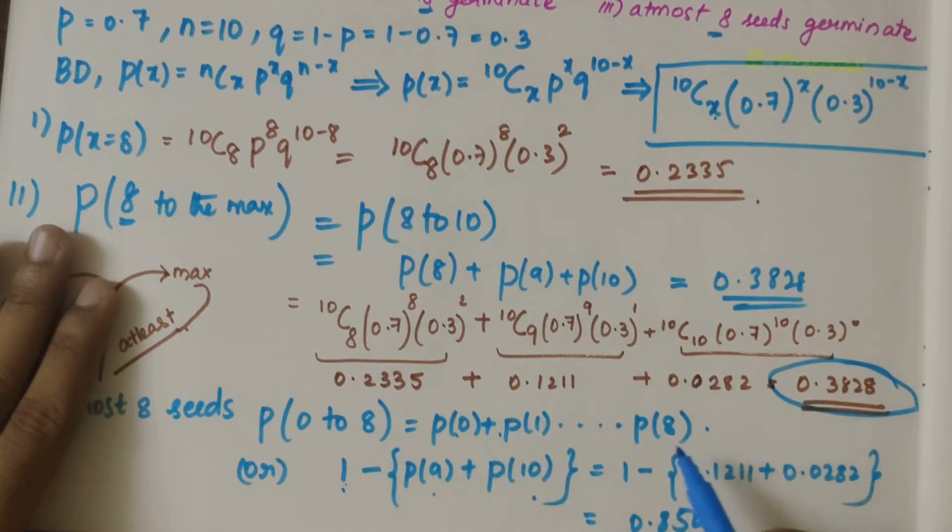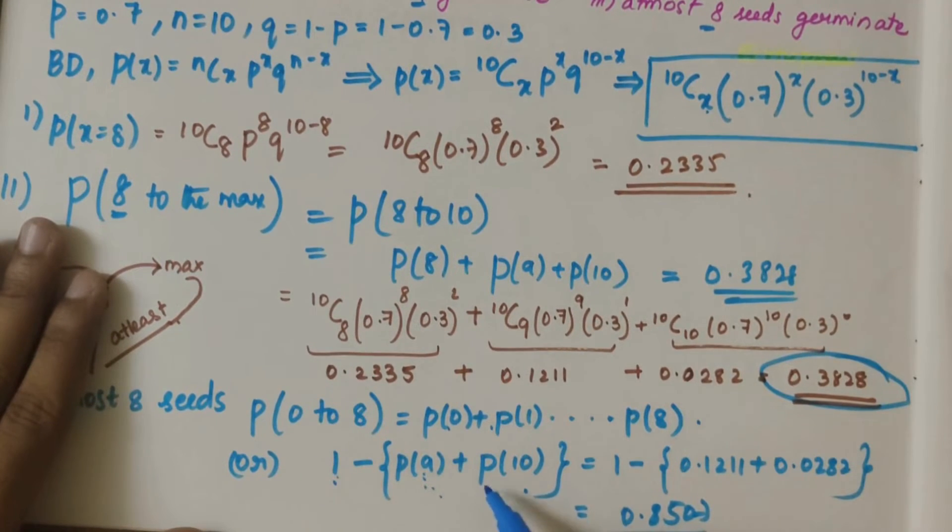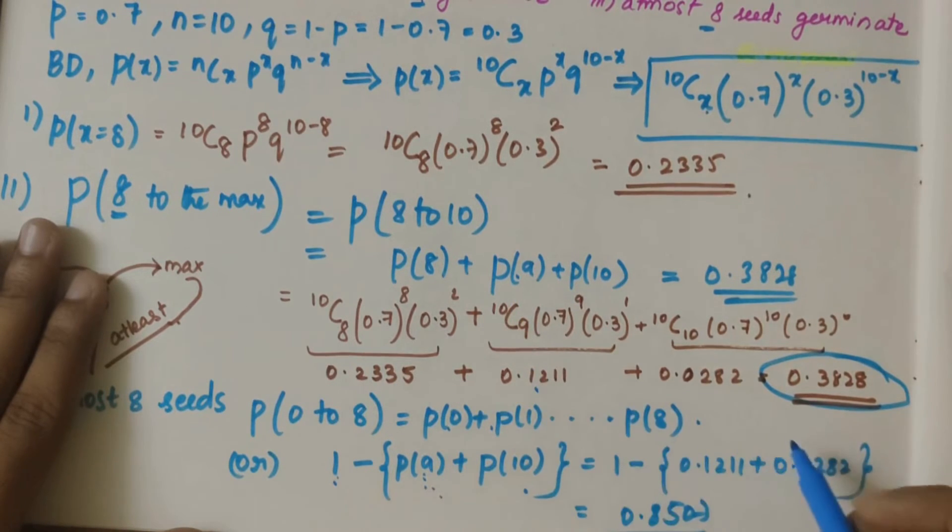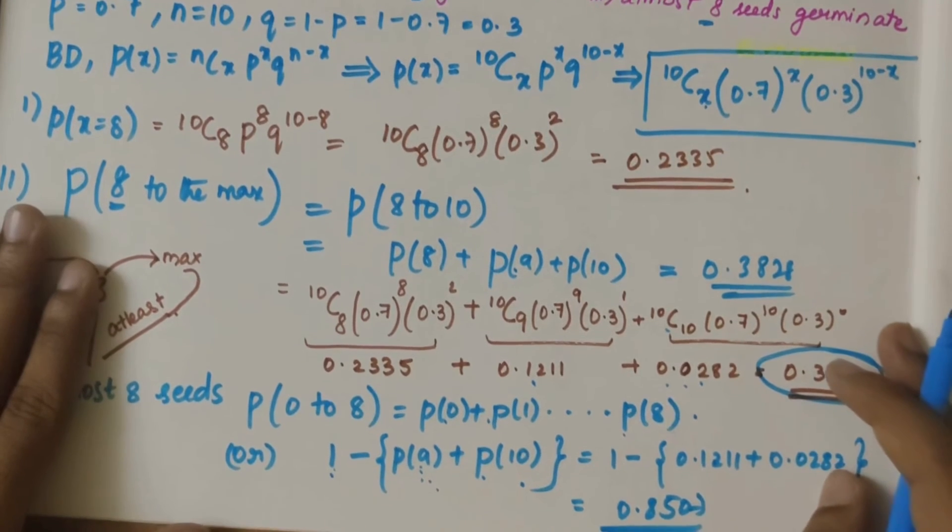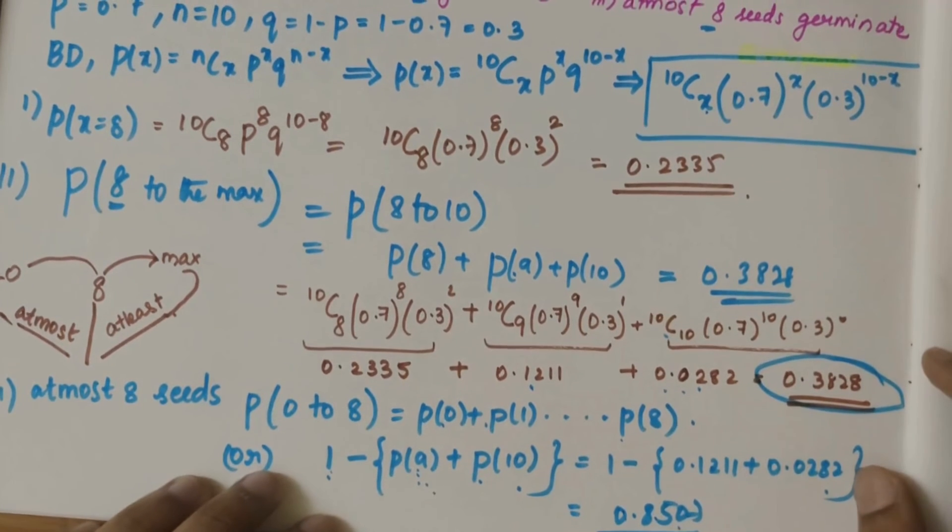P(9) from this we know is 0.1211, and p(10) from this we know is 0.0282. So 1 minus, if you sum up this and find out the difference, you'll get it as 0.8507.